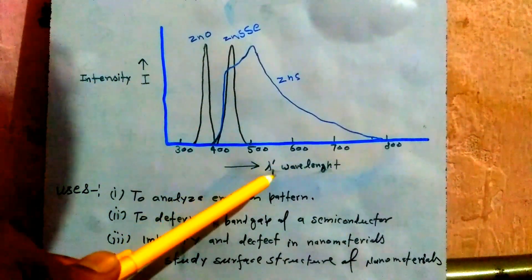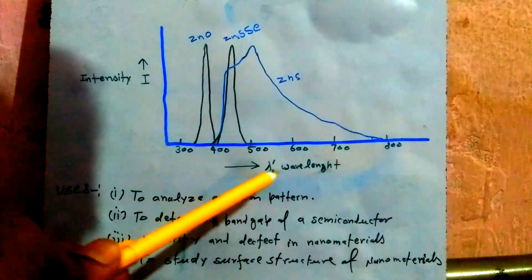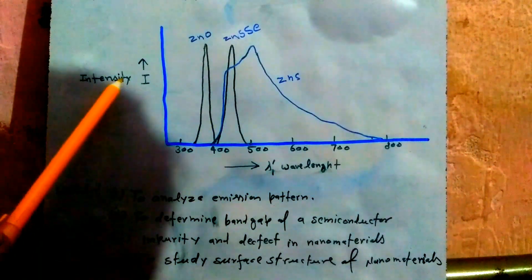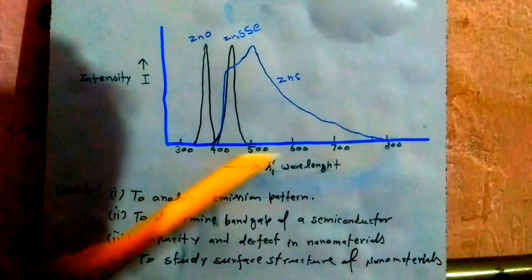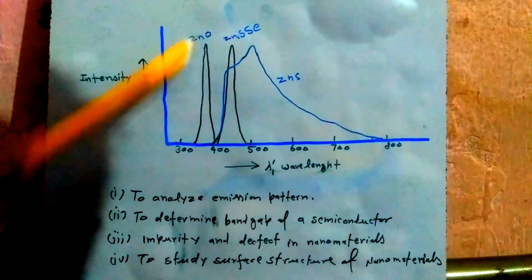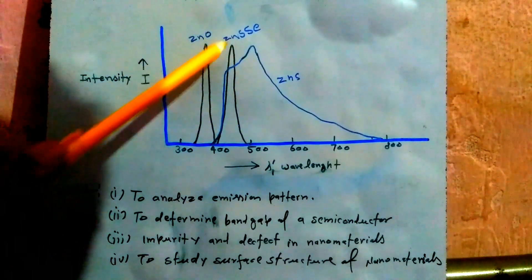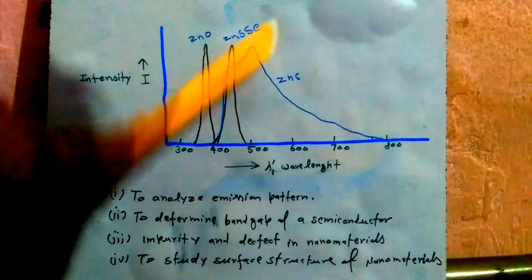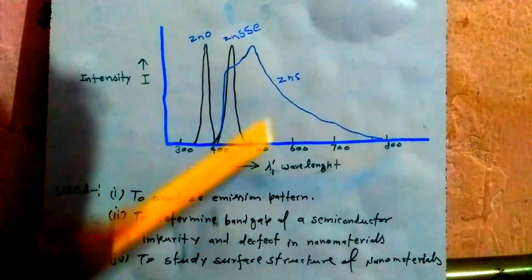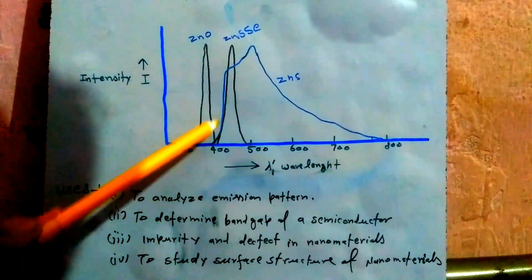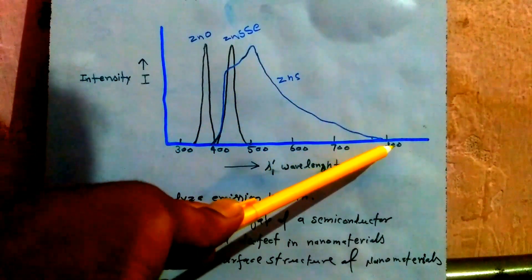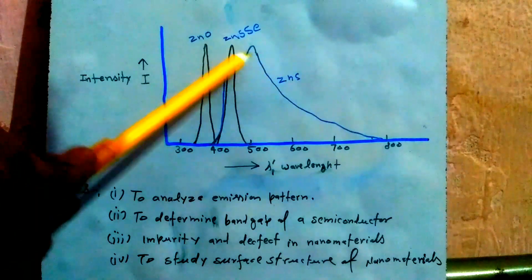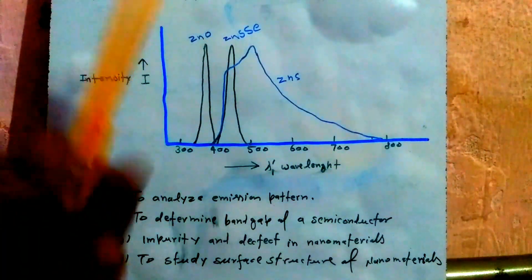This graph shows wavelength on the x-axis from 300 to 800 nanometers against the intensity of the re-emitted spectrum on the y-axis. For zinc oxide (ZnO), there is one intensity-wavelength graph; for zinc sulfide selenide (ZnSSe), there is another; and for zinc sulfate, the graph shows an exponential growth, a peak, and then a fall in intensity at 800 nanometers wavelength. These three peaks correspond to three different semiconductors.